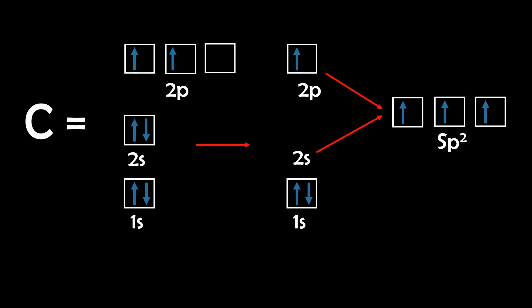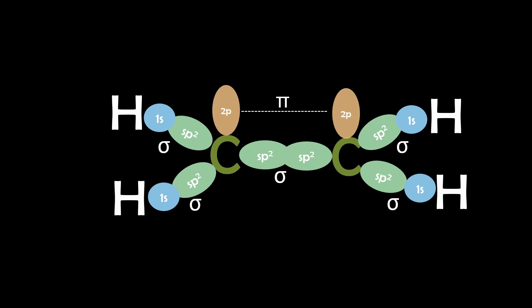So instead, if we mix one S orbital with two P orbitals, we get SP2 hybridization. This results in three equivalent bonds per carbon, each with approximately 33% S character and 66% P character.